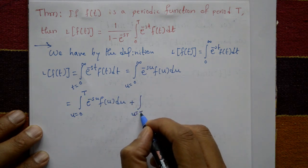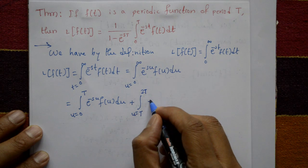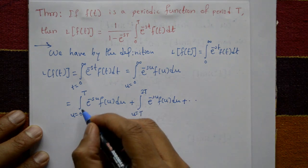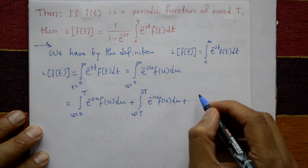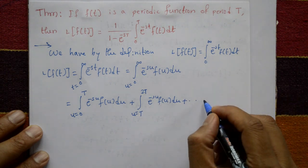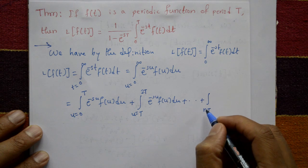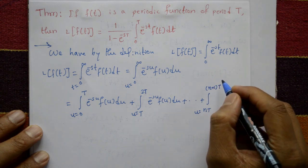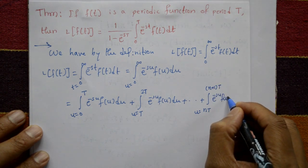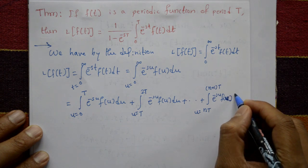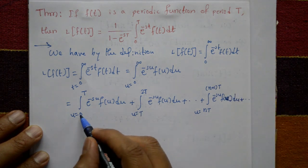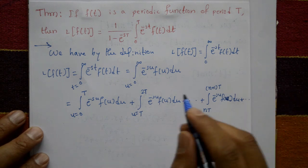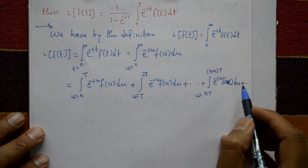The integral is split piecewise: the first term is u from 0 to T, the second term is u from T to 2T of e raised to minus su times f(u) du, plus u from 2T to 3T, from 3T to 4T, and so on — continuing up to the nth term which is u from nT to (n+1)T, giving infinitely many terms.